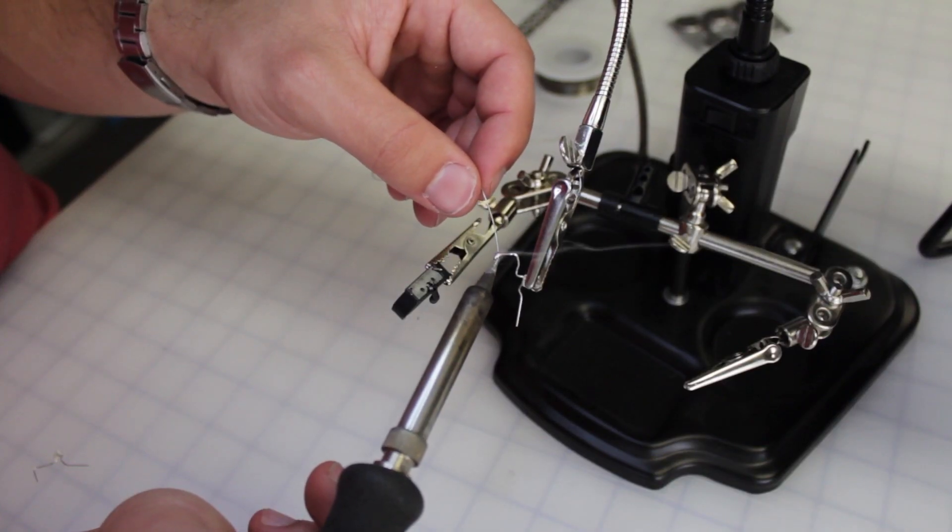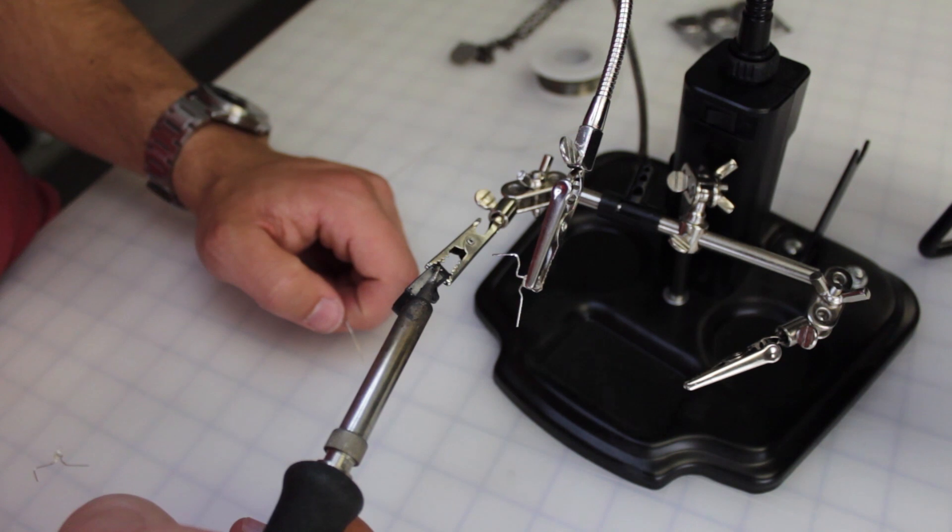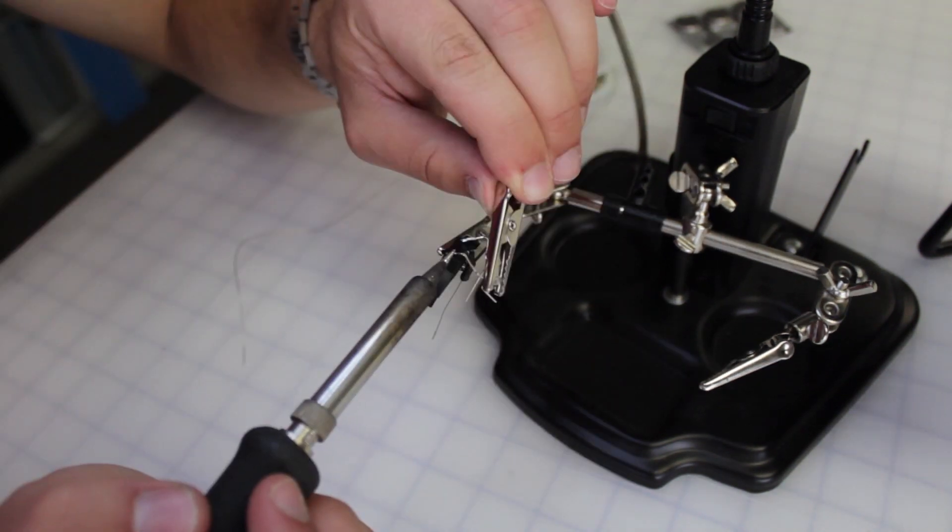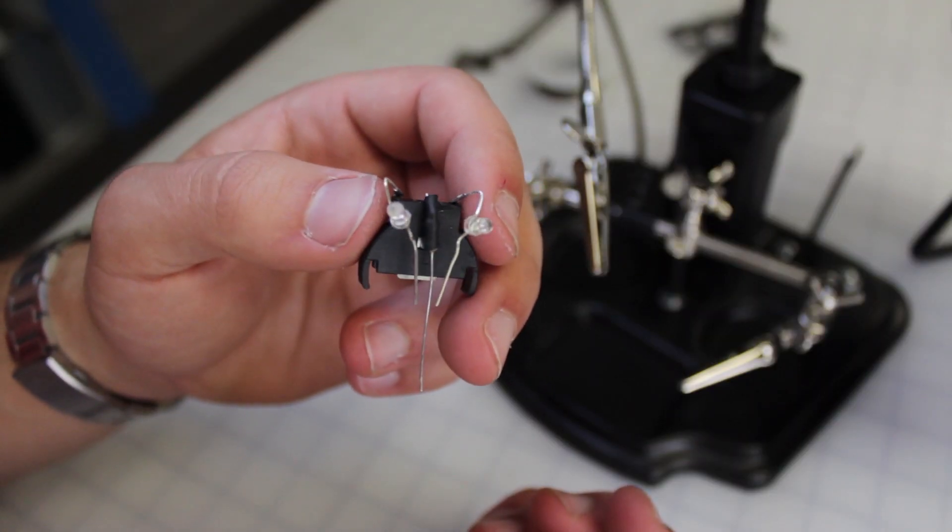Now we're going to tin the longer lead on an LED and an outside pin on the battery holder and solder the two together. Repeat this on the other side and your circuit should look like this.